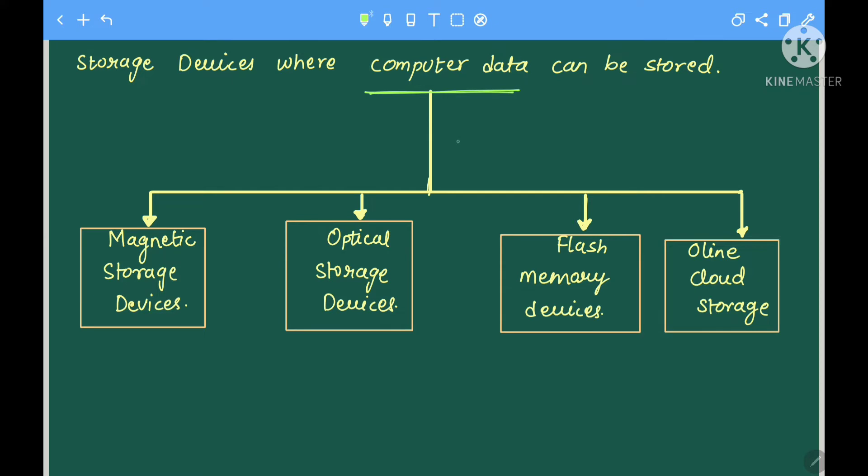These are divided into four categories: first is magnetic storage device, second is optical storage device, third is flash memory device, and fourth is online cloud storage. We will learn each of them one by one.